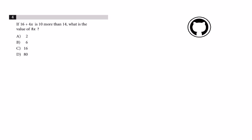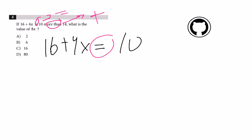To solve this question, we're going to create an equation out of the variables that they have given us. First, we're going to look at the keywords within the question. We have 'is' and 'more than,' and 'is' is the same as equals to, and 'more than' is the same thing as addition. So we're going to create an equation: 16 plus 4x equals 10 more than 14.